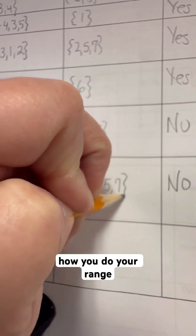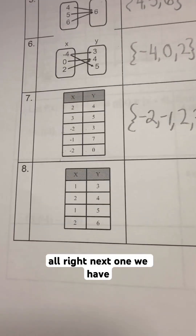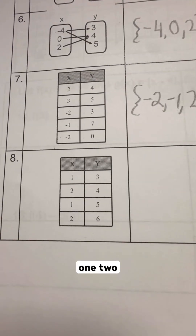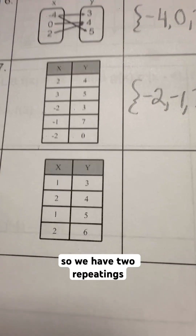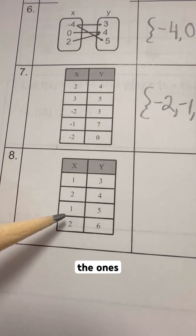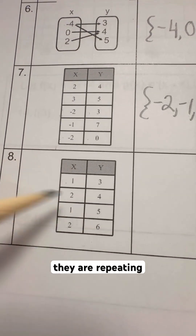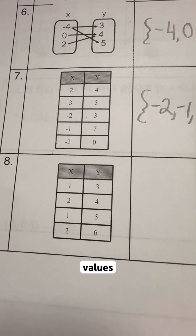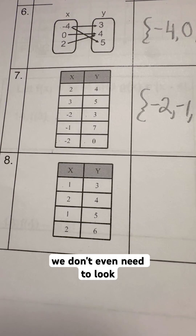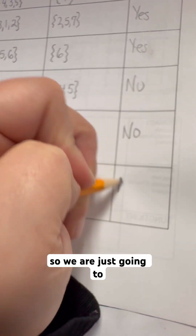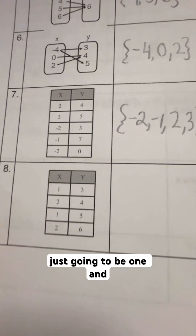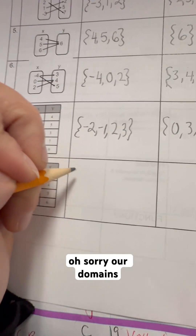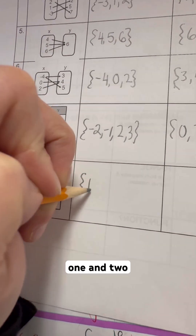Next one we have x values 1, 2, 1, 2 — so we have two repeatings. We look at the ones: they repeat with two different y values. We don't even need to look at the twos — we know it's not a function. So we put no. Our domain is just 1 and 2.